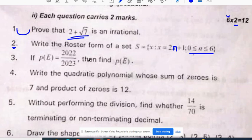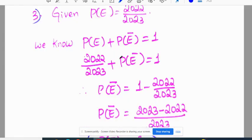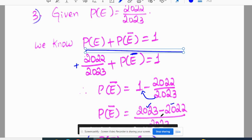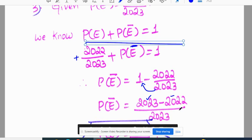P of E is equal to 2022 by 2023, then find P of not E. We know the formula P of E plus P of not E is equal to 1. So P of E given as 2022 by 2023 plus P of not E is equal to 1. P of not E is equal to 1 minus 2022 by 2023, which equals 1 by 2023.